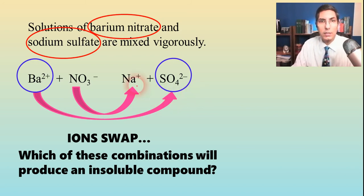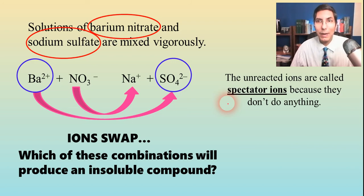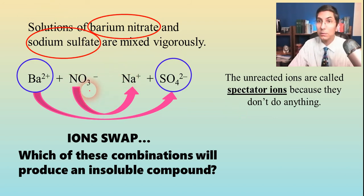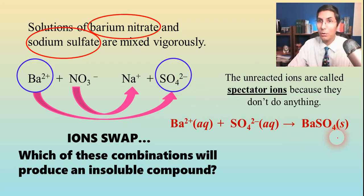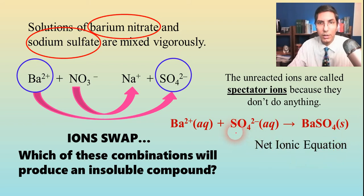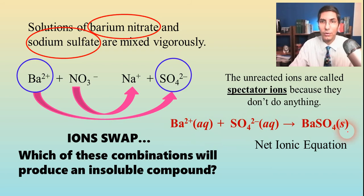That means sodium and nitrate are called spectator ions. They're called spectators because they're not really doing anything — like spectators at a ball game, they're there but not participating in the reaction. As a result, we don't write them into the net ionic equation. So what we have is barium 2+ and sulfate 2− combining to make barium sulfate. When you write the net ionic equation, put the state symbols in: ionized species are aqueous, and the insoluble compound is a solid. This is a balanced equation, so that is our net ionic equation.